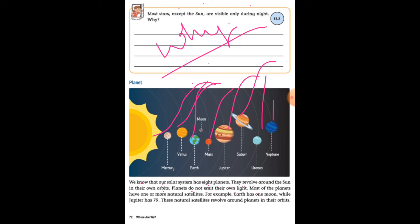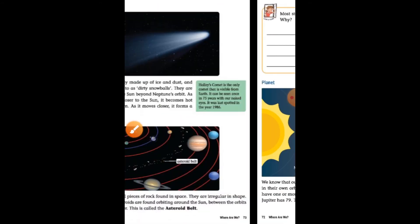Most of the planets have one or more natural satellites. For example, Earth has one moon while Jupiter has 79. These natural satellites revolve around the planets in their orbits. What is important is that you will learn these eight planets.